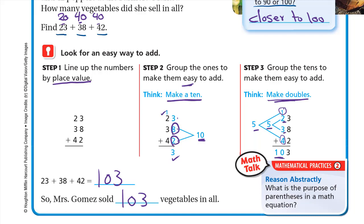So Mrs. Gomez sold 103 vegetables in all. To recap: first, line up numbers by place value. Second, in the ones place we have 3, 8, and 2 — choose 8 and 2 because they add up to 10, so 10 plus 3 equals 13, write 3 down and carry 1. Third, in the tens we have 1, 2, 3, and 4 — choose 1 and 4 to make 5, and 2 and 3 to make 5; five plus five is 10.